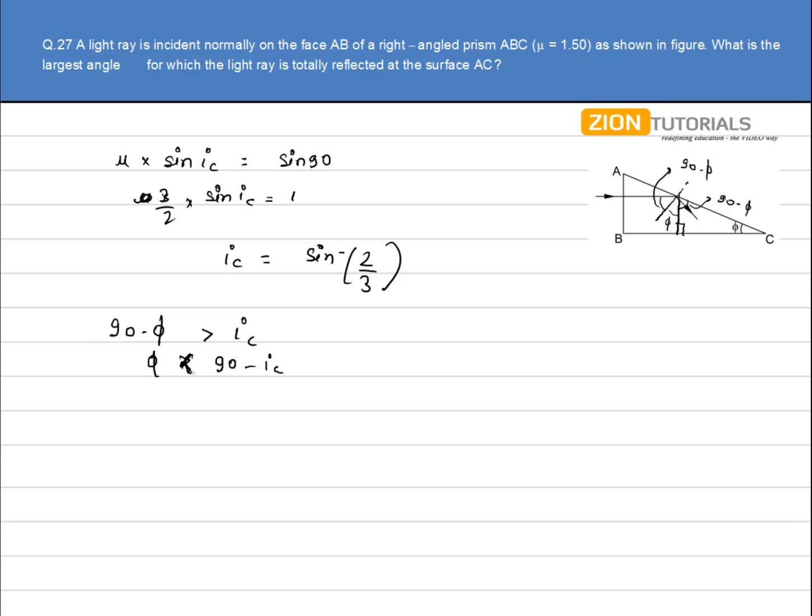This gives phi less than 90 minus sine inverse of 2/3. This equals cos inverse of 2/3, using the property that sine inverse theta plus cos inverse theta equals 90 degrees. So phi must be less than cos inverse of 2/3.